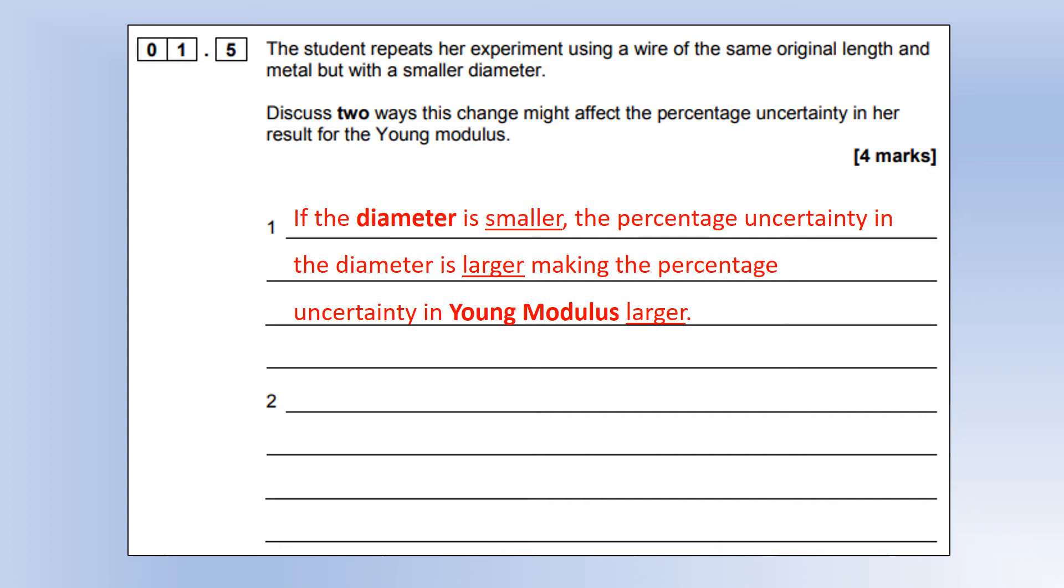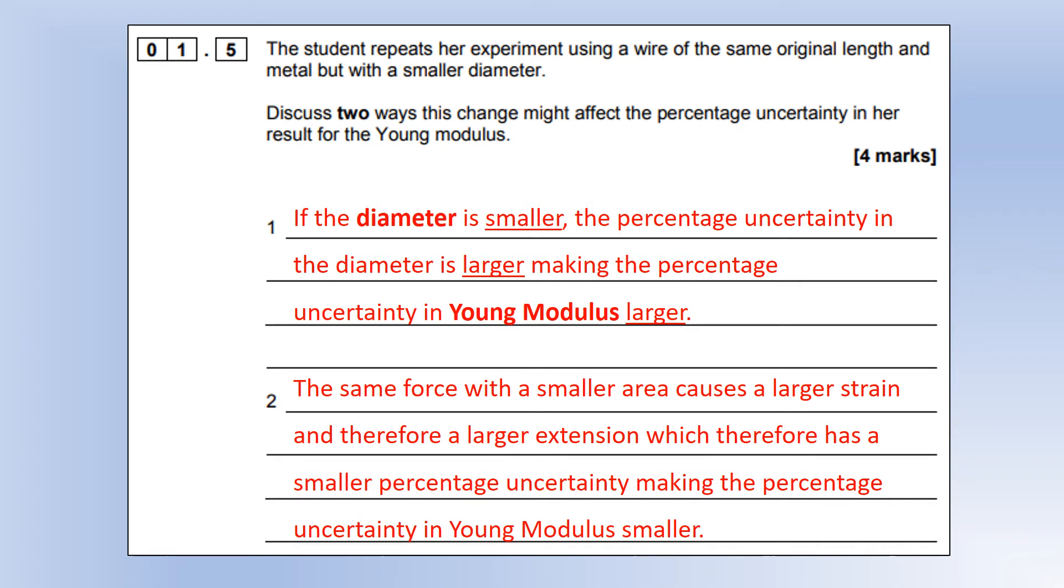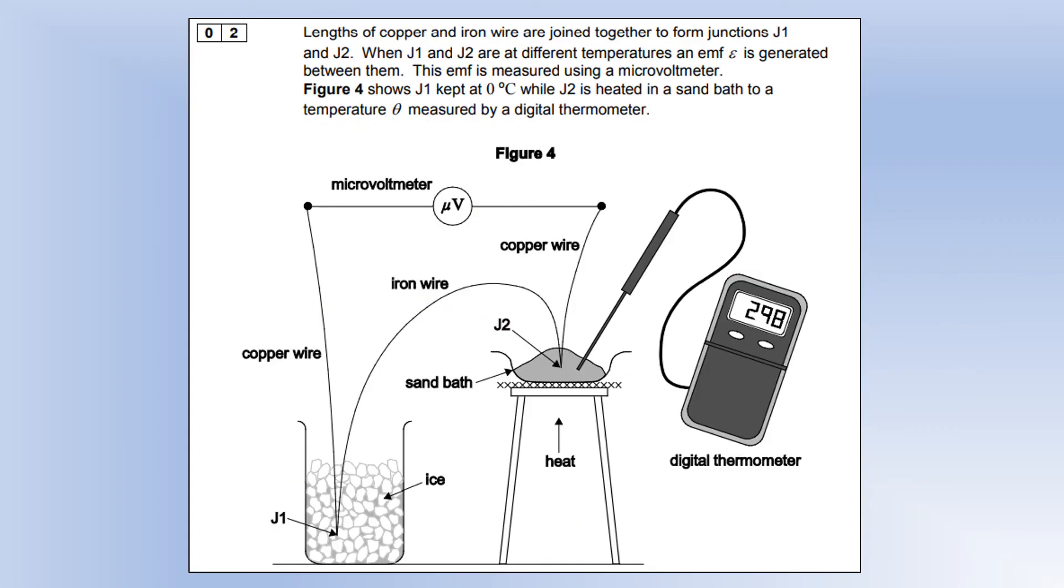The slightly more difficult thing to spot is if we're using the same force with a smaller area, that will have a larger strain and therefore a larger extension. So the extension has a smaller percentage uncertainty, making the percentage uncertainty in the Young's modulus smaller.